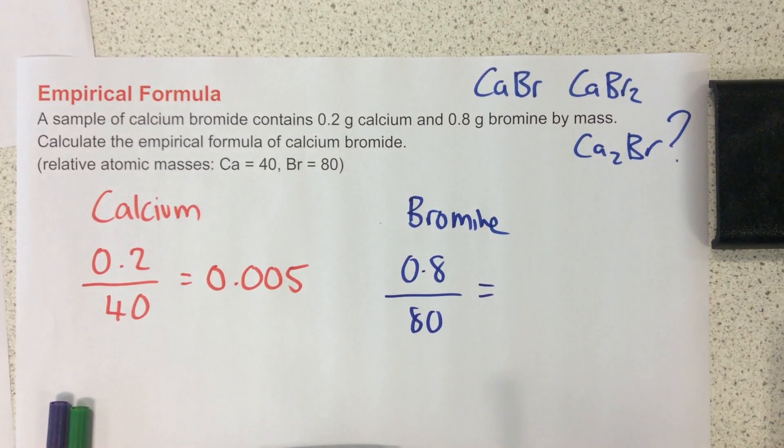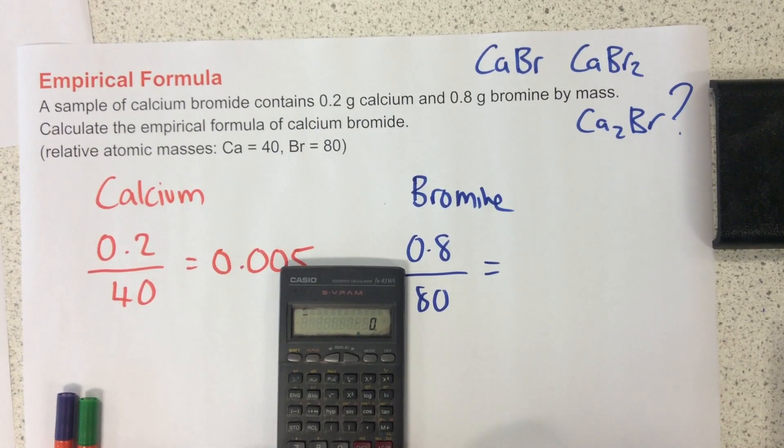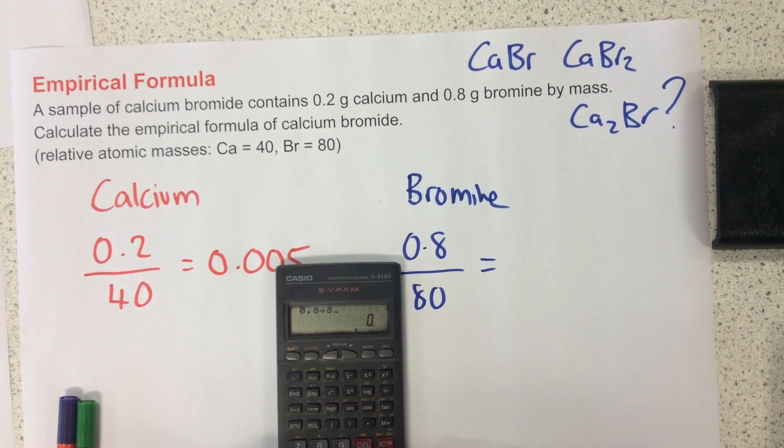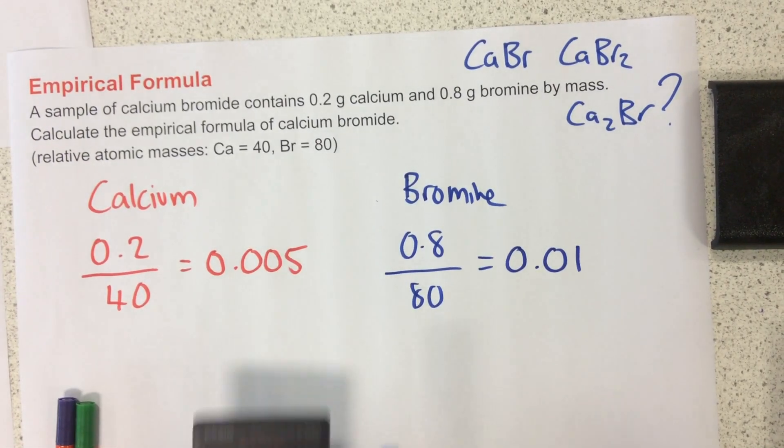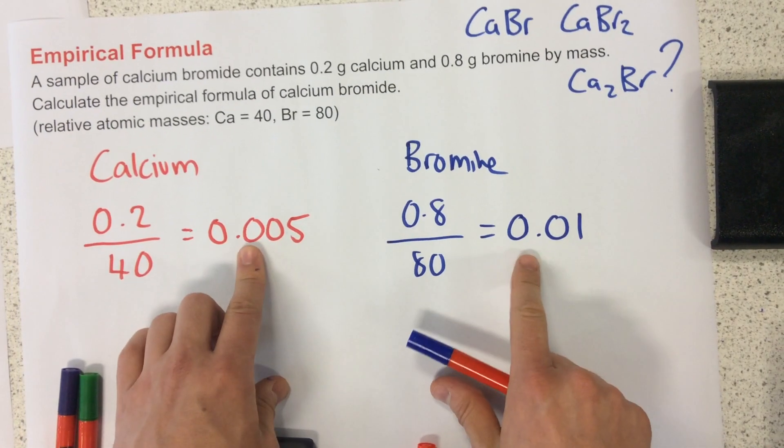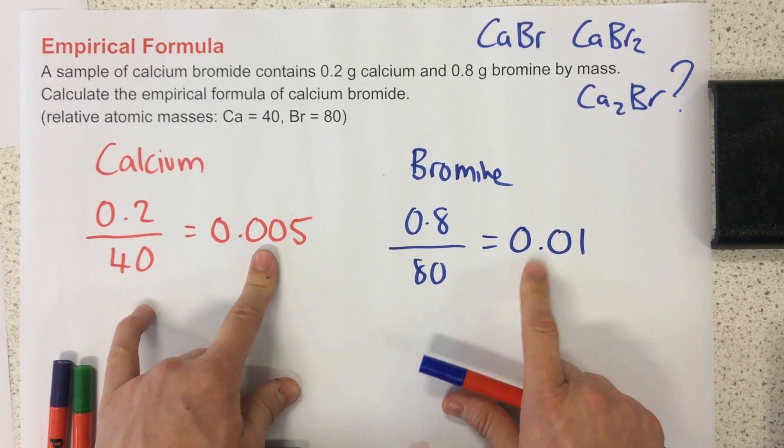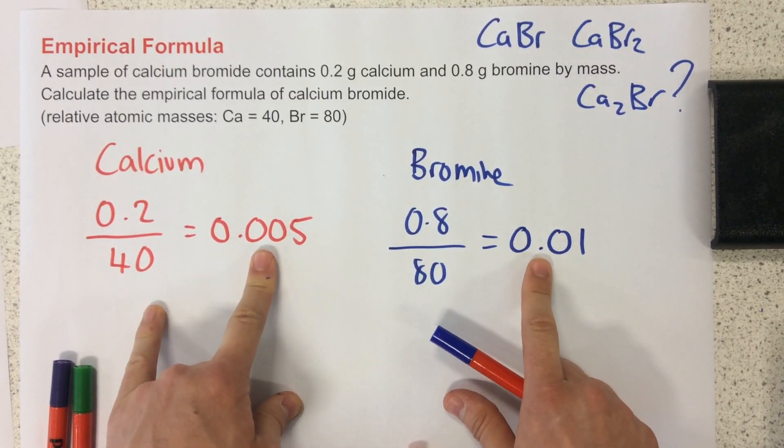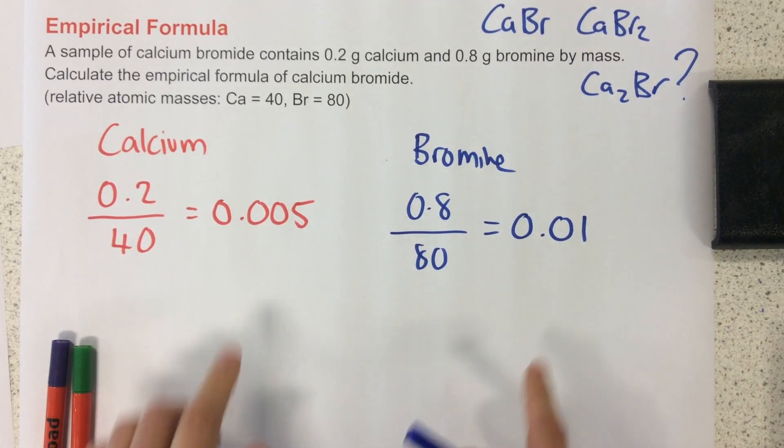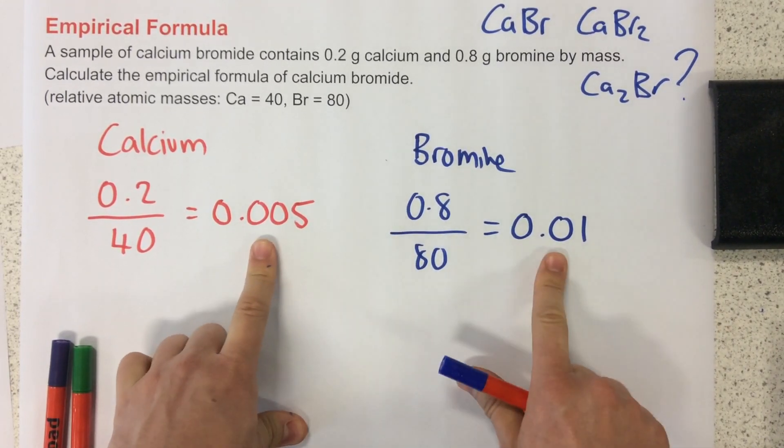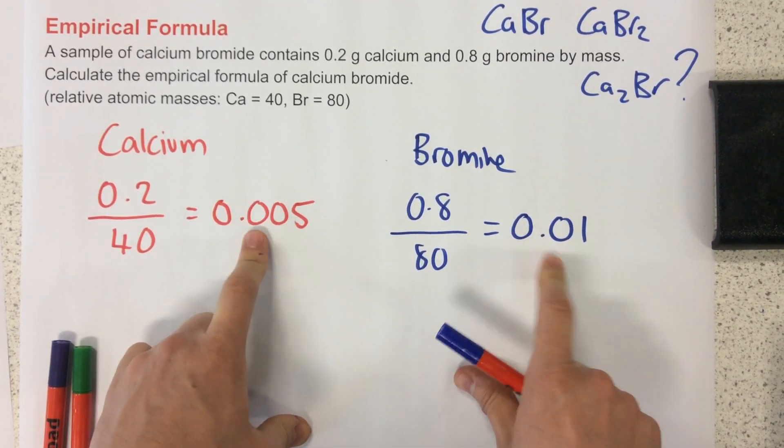So now I need to think of the ratio between calcium and bromine. So again, you might be able to see this straight away. But the calculation you need to do, remember, is divide by the smaller number of the two, which is this one here.